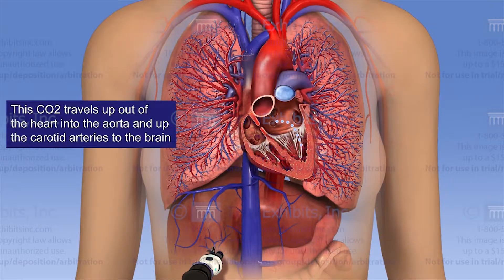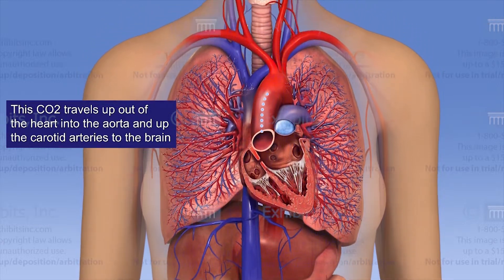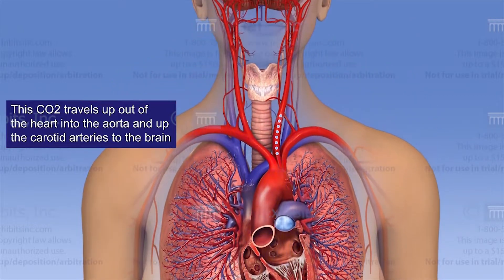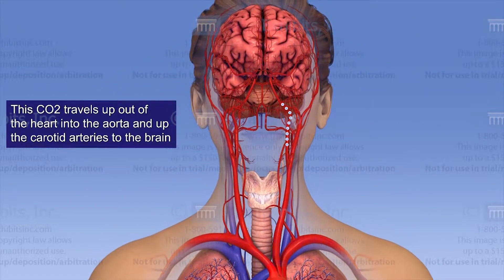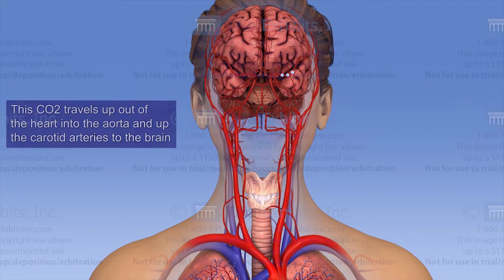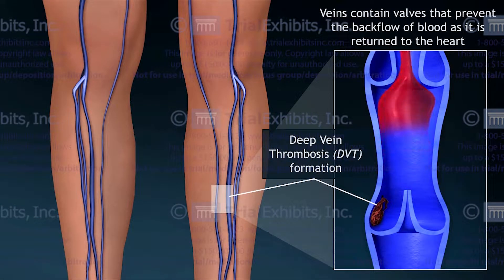Sometimes flow and motion are best represented by the movement of dots. In this sample, we can clearly appreciate the movement of CO2 through an artery by watching these dots flow up from the heart to the brain. Dots also effectively represent the flow of pain impulses along the spinal cord, as shown in this example.